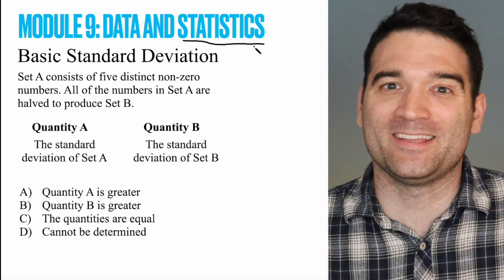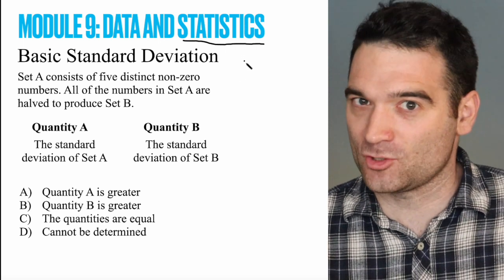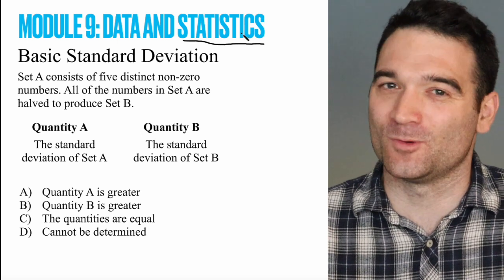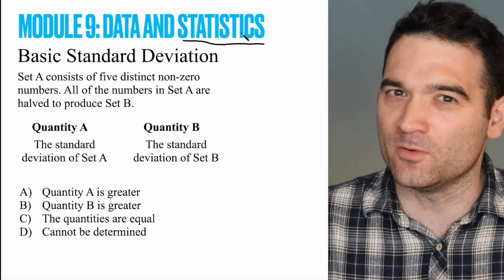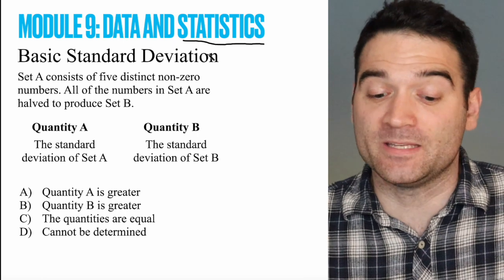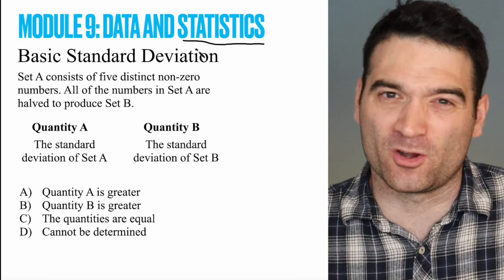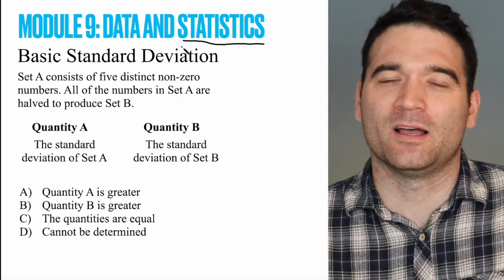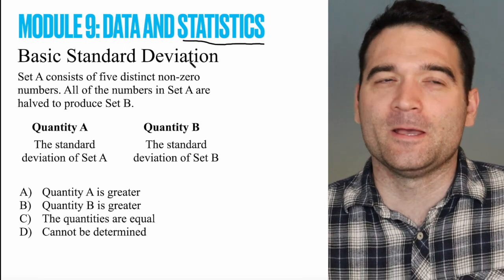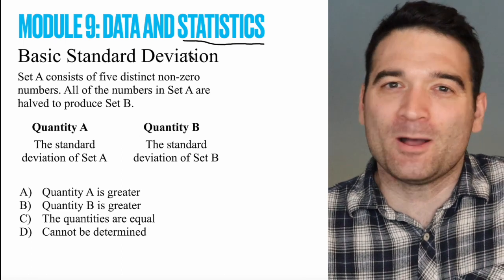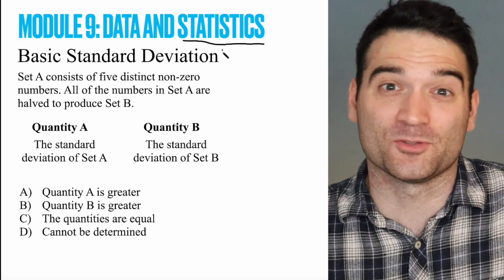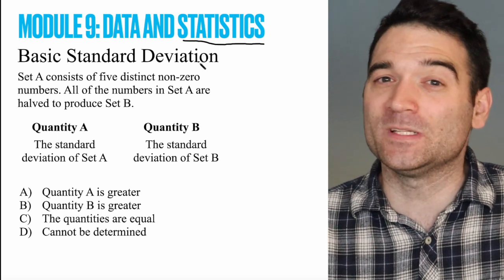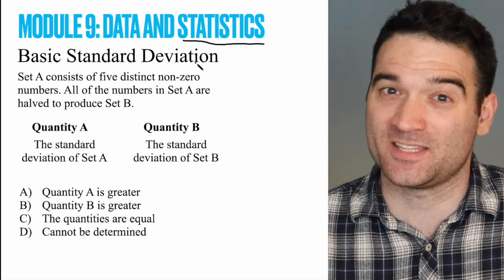And the reason for that is a lot of the non-official prep books, not the official guide, but the non-official ones, make a big deal about statistics on their practice material. Permutations, combinations, probability, that sort of thing. But the amount of statistics problems that you'll see in those non-official books is not really representative of what you're going to see on the test.